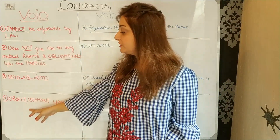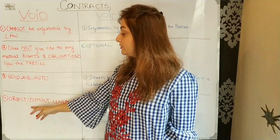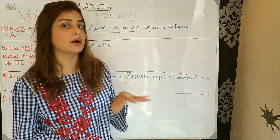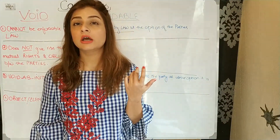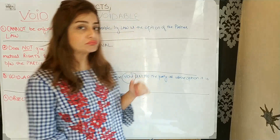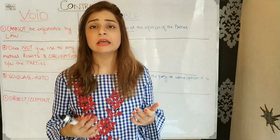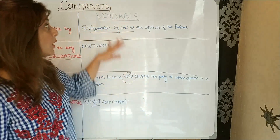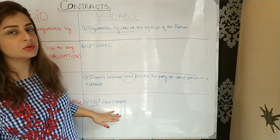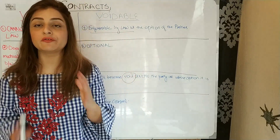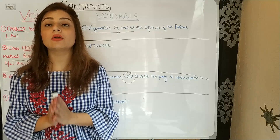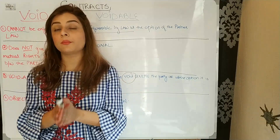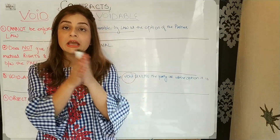Number four difference: void contracts arise when the object and consideration are unlawful. So if the object and consideration are unlawful, the contract is void — like gambling or horse betting contracts. They are void from the beginning. However, voidable contracts involve situations like lack of free consent — as discussed in the consent lecture. The contract is voidable at the option of the party. Parties have an option to treat it as void or enforce it.